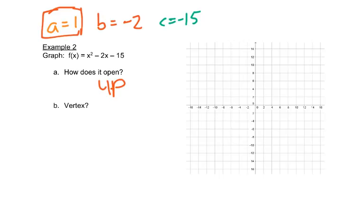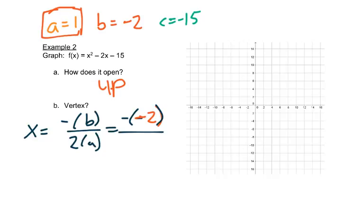x, we want to do x is equal to the opposite of b over 2 times a. So that would be the opposite of negative 2 over 2 times 1. Opposite of negative 2 is 2, and 2 times 1 is 2, which tells us x is 1.